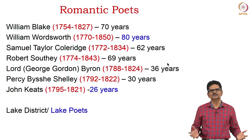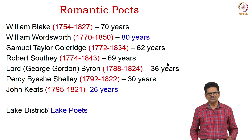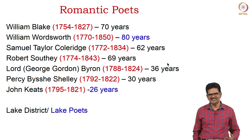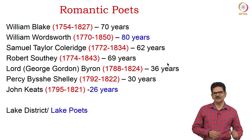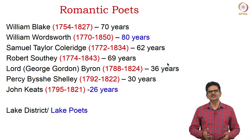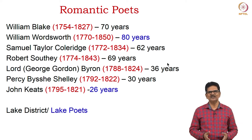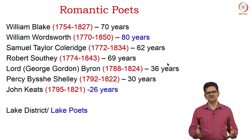Here we have the list of Romantic poets: William Blake, William Wordsworth, Samuel Taylor Coleridge, Robert Southey, Lord Byron, Percy Bysshe Shelley, and John Keats. The first three — Wordsworth, Coleridge, and Southey — were called Lake Poets. We can see that it was Wordsworth who lived the longest, and it was John Keats who lived for the shortest period of time, but all of them produced great poetry which we cherish today.